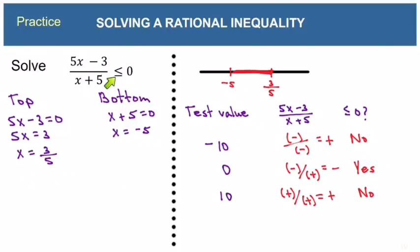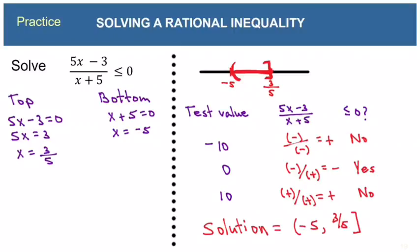We do have an 'or equal to' bar here, so you're thinking brackets. But remember that only the top critical number can get a bracket — the bottom one cannot. So our solution is parenthesis, negative 5, comma, three-fifths, bracket.